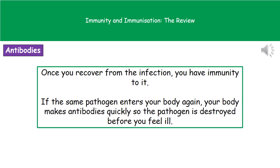Once you've recovered from an infection, you have immunity to it. If that exact same pathogen entered your body again, your body would be able to make the antibodies very quickly, meaning the pathogen would be destroyed before you feel ill. This is how immunity works: once you've been exposed to a pathogen with its specific antigens, your body will recognize it and make those complementary antibodies quickly, destroying it before you actually get ill.